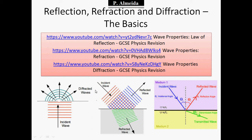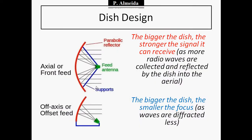But you also need to know about this part, which is the dish design. So this dish design is when you use your knowledge of reflection and diffraction to apply it in everyday life. For example, the antenna or when you're using radio telescopes or any of these things. So the bigger the dish that you have, the stronger the signal it can receive, which is good because there are going to be more radio waves collected and then reflected by the dish into the aerial where you can get the detection of the waves.